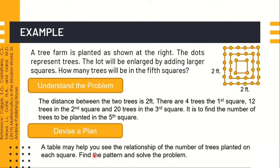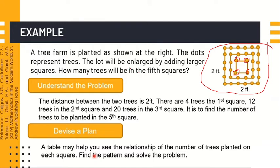Example number two: A tree farm is planted as shown. The dots represent trees. The lot will be enlarged by adding larger squares. How many trees will be in the fifth square? As you can see in this illustration, each dot represents a tree and the distance between trees is two feet. The question asks how many trees will be in the fifth square.